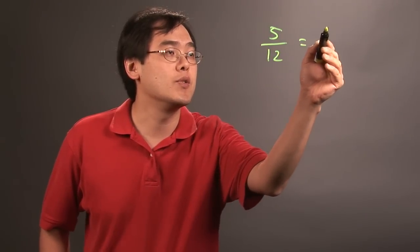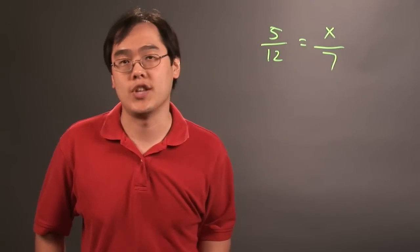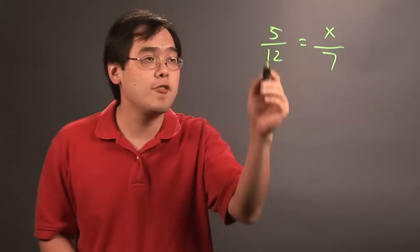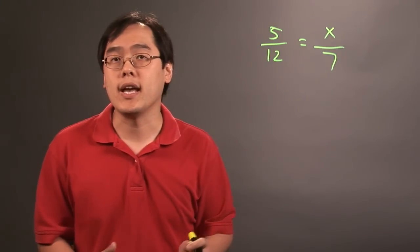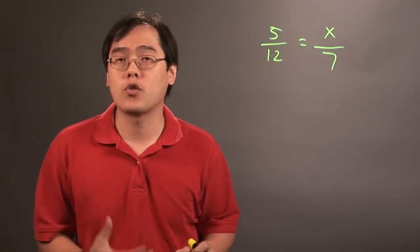5 over 12 equals x over 7, let's just say. The idea here is you have proportions 5 and 12 and x over 7, and using cross products involves cross multiplication.